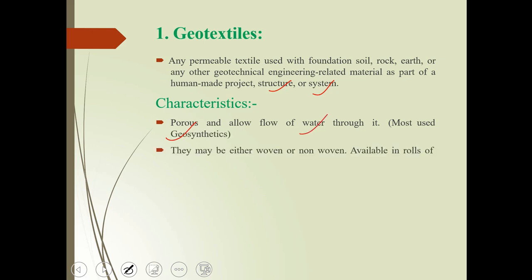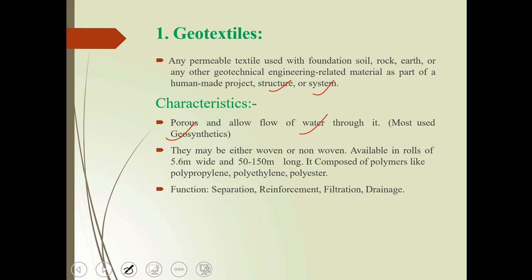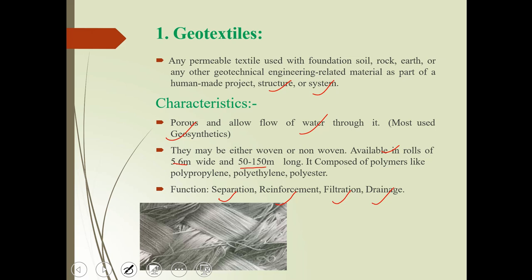Geotextiles are of woven type or non-woven type, available in rolls 5.6 meters wide and 50 to 150 meters long. They are composed of polymers like polyester. The main functions of geotextiles are separation, reinforcement, filtration, and drainage.